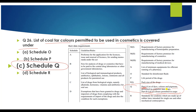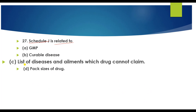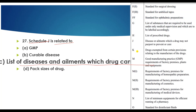Question number 27: Schedule J is related to the list of diseases or ailments which a drug may purport to prevent or cure. Schedule J states that no drug can claim to completely cure an XYZ disease.